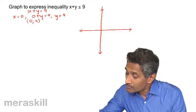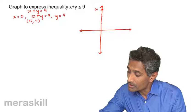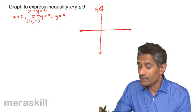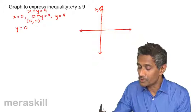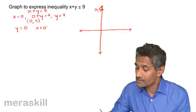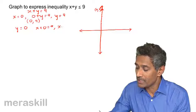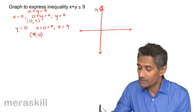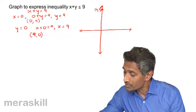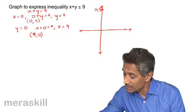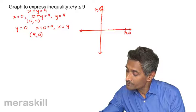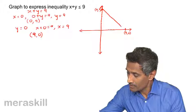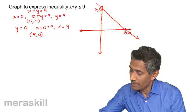The point 0 comma 9 is marked on the y-axis. Next, we take y as 0 and substitute: x plus 0 is equal to 9, so x is equal to 9. The second point is 9 comma 0, which we mark on the x-axis.